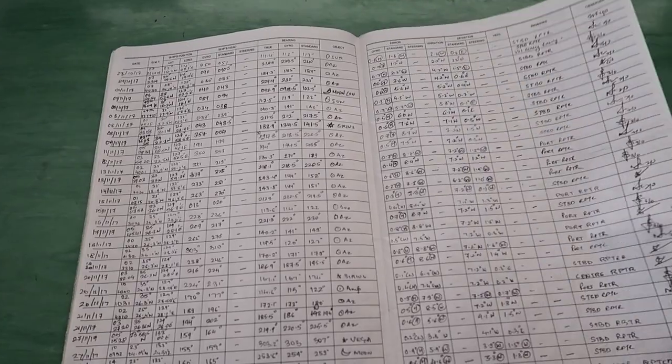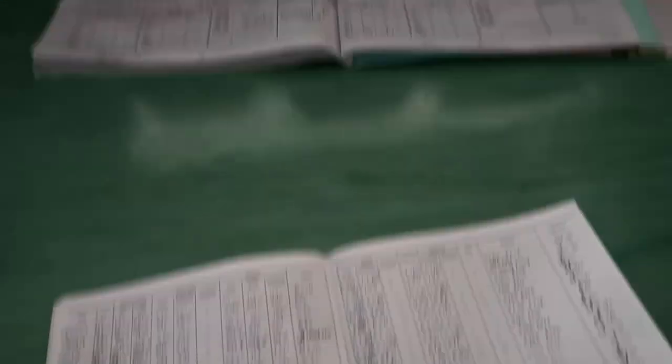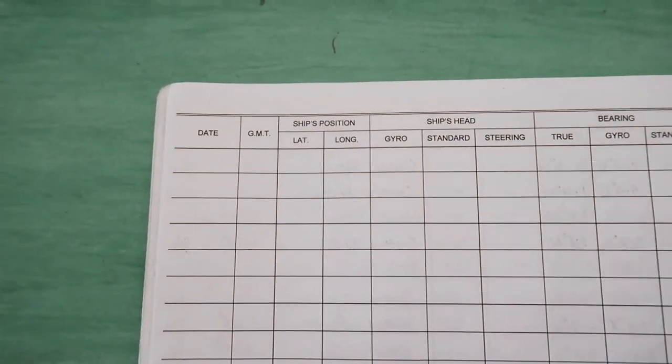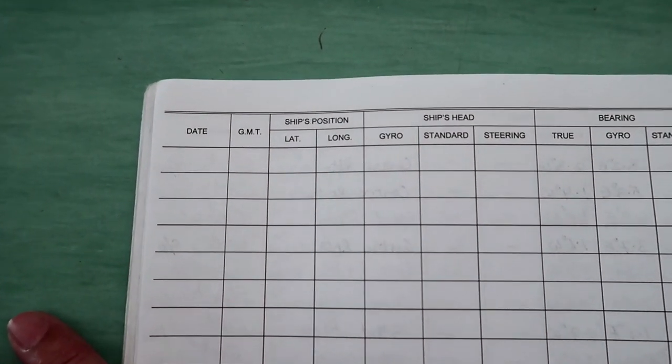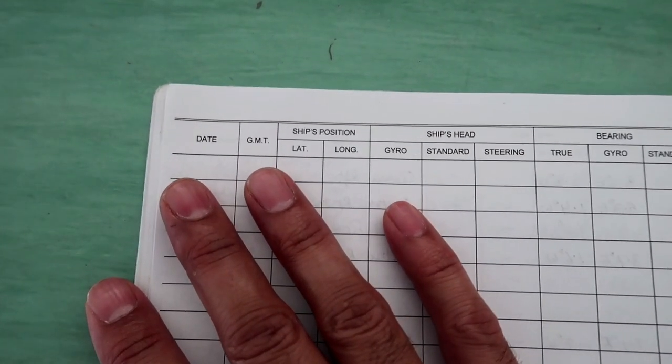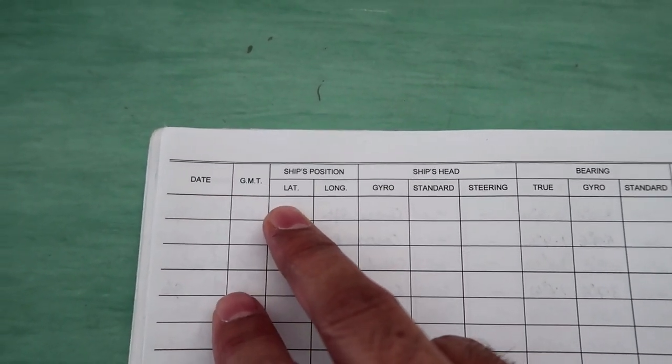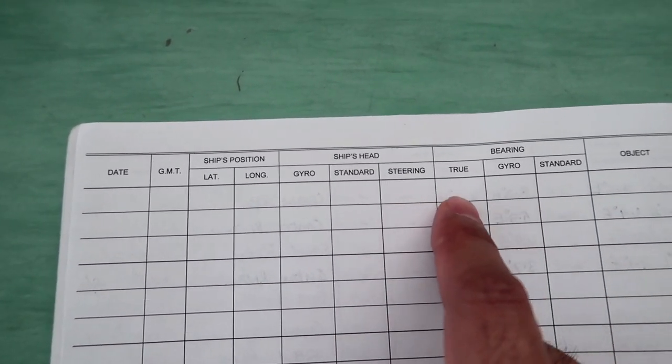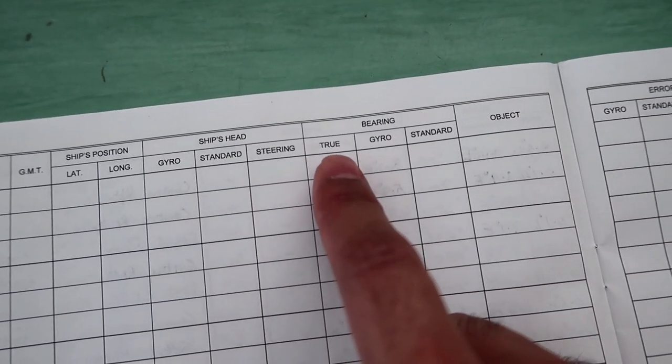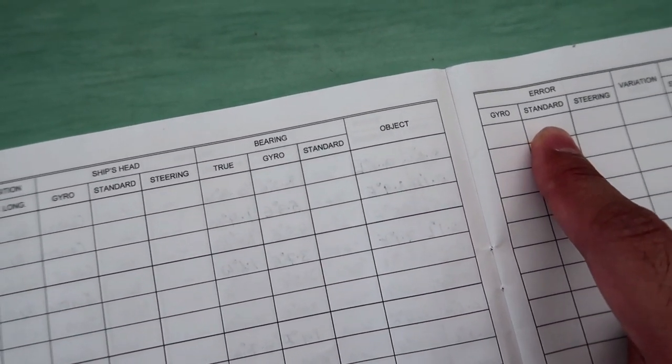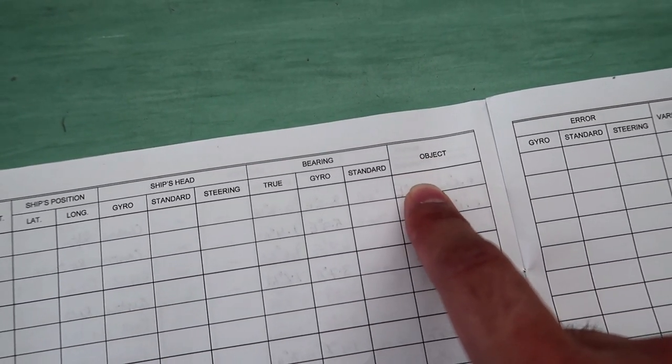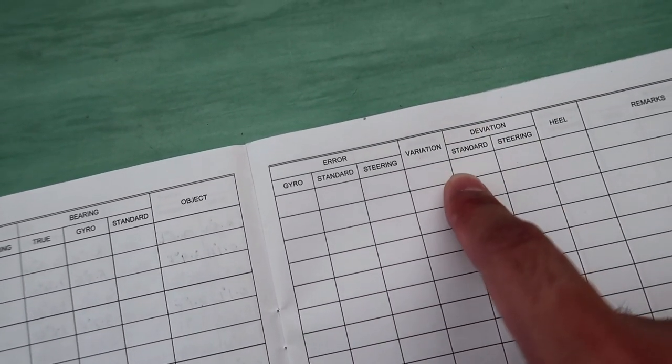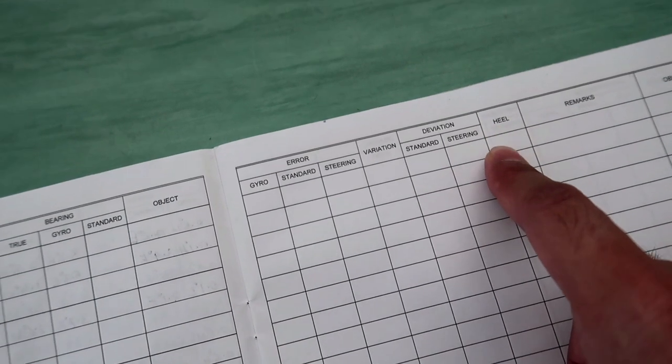You will have a compass error book on board which looks something like this. When they are not able to take error due to overcast skies or heavy traffic, they have to log it in the deck log book as error unobtainable. This log book doesn't have any special information, it has all the information which we have already explained to you, but we are just showing it for your reference. First section is date, GMT time, latitude, longitude, ship's heading gyro, standard bearing, true gyro, standard. When you get the difference between true and gyro you get gyro error. When you get the difference between true and standard you get magnetic error. You have to write here if the bearing was taken from sun, moon, or stars, and you will write your variation and deviation here. If the vessel has any list or heel you can mention that. You can write remarks and sign it.